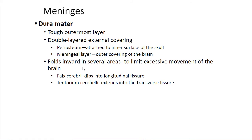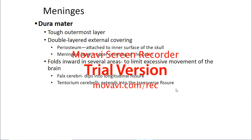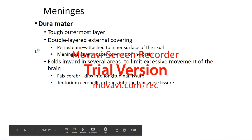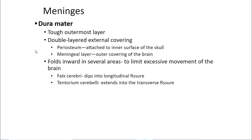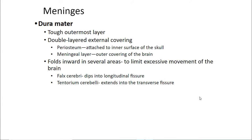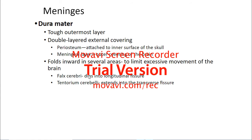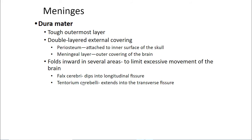The dura mater is a tough outermost layer — a double-layered external covering. The periosteal layer is attached to the inner skull and the meningeal layer is the outer covering of the brain. It folds inward in several areas to limit excess movement of the brain. These folds include the falx cerebri — a meningeal enfolding that dips into the longitudinal fissure — and the tentorium cerebelli, an enfolding of the meningeal layer that extends to the transverse fissure.